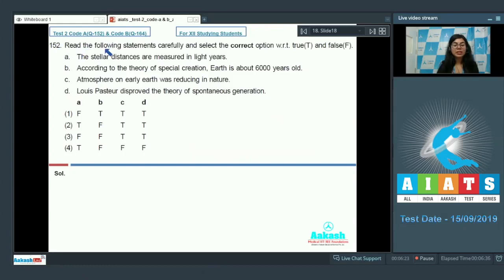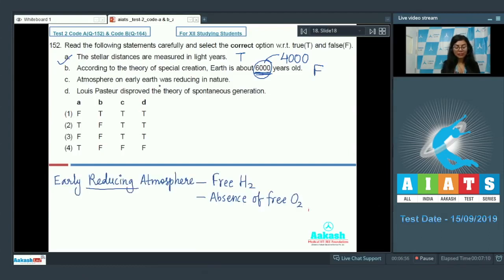Question number 152 students. It reads: read the following statements carefully and select the correct option with respect to true and false. Various combinations are given. Let's go over them one by one. The stellar distances are measured in light years, that's true. According to the theory of special creation, earth is about 6000 years old. This part is problematic - according to theory, earth is about 4000 years old. So this is false. Atmosphere on early earth was reducing in nature, this is again true. Louis Pasteur disproved the theory of spontaneous generation. Yes, he did with his famous experiment where he took killed yeast in a sterilized flask. So this is again true. The correct option in that case would be option number 2.